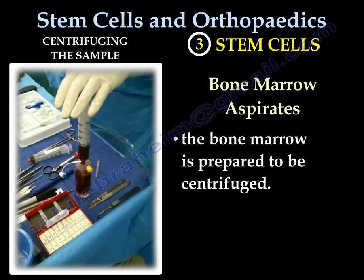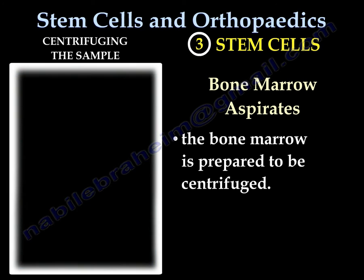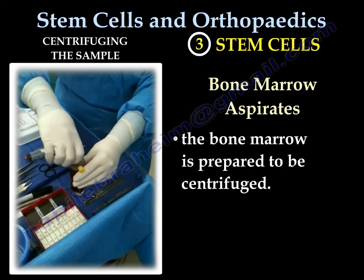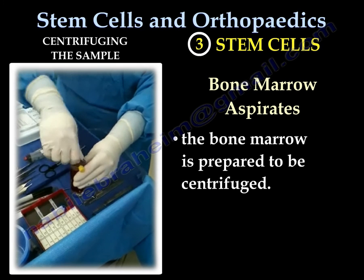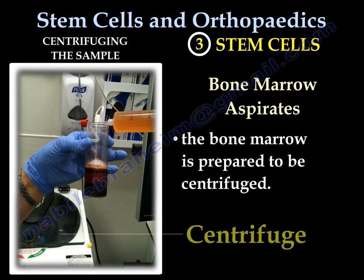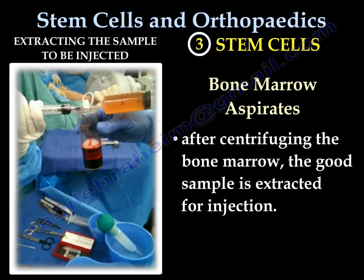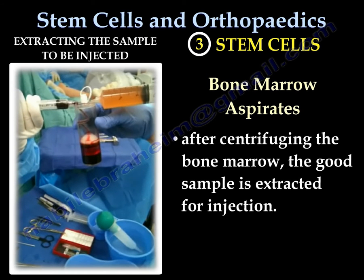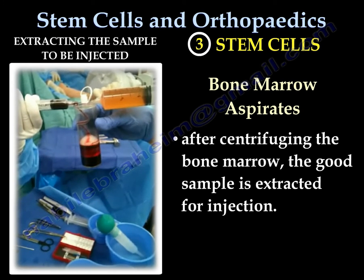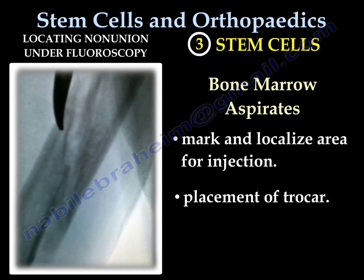The marrow aspirate is prepared to be centrifuged. The container is closed for the marrow to be centrifuged. After 15 minutes, you can take the sample out and get rid of the bad marrow aspirate. The red part is the good part that contains stem cells, and the good red sample is extracted for injection.